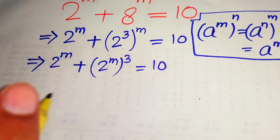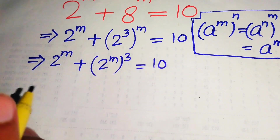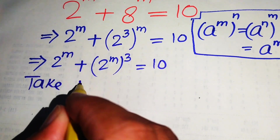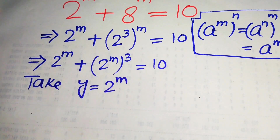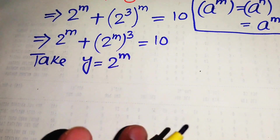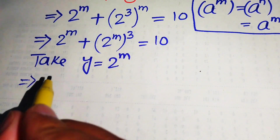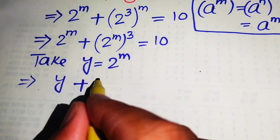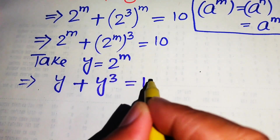Now we see that 2 to the power of m appears as the same term in both places, so we let y equal 2 to the power of m. Substituting y into the equation, our equation becomes y plus y cubed equals 10.